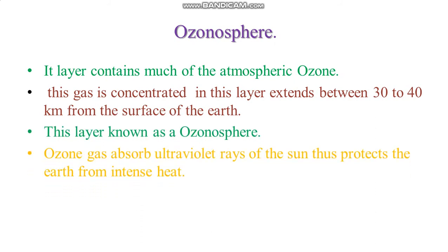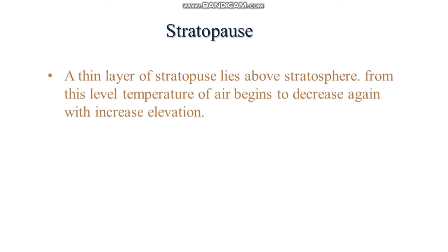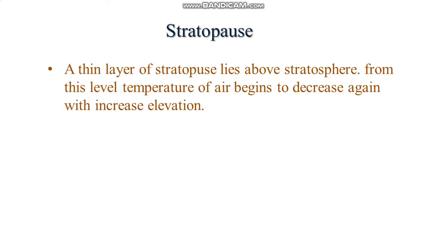Ozone gas absorbs ultraviolet light rays from the sun, thus protecting the earth from intensive radiation. The ozonosphere is therefore very important for all living things. Above the stratosphere lies a thin layer called the stratopause, from which the temperature of air begins to decrease again with increasing elevation.